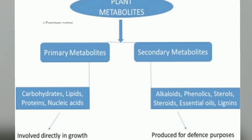Primary metabolites are the substances which are useful for the growth and development of plants. They are carbohydrates, fats and proteins. Plants use these substances for their own growth and development. Some other substances produced in plants which are not useful for their growth and development are called as secondary metabolites.